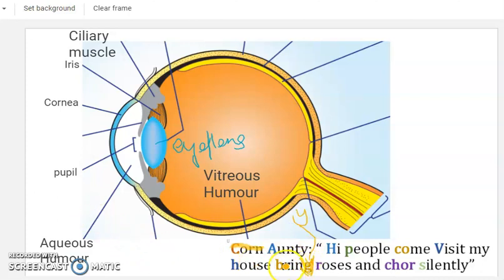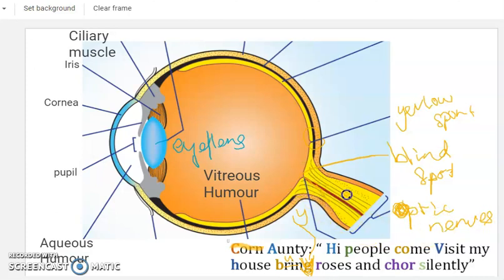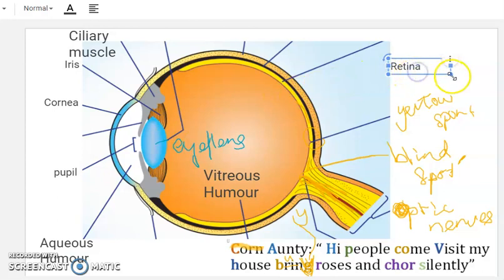Buy roses — B stands for blind spot, 看不到的. What about Y — there's a yellow spot. 你们要知道 blind spot 为什么它是忙的呢？因为这个 optic nerve，optic nerve 的尾巴全部都在这里，that's why 这个是 blind spot. Yellow spot 是最 sensitive 的. Roses — R stands for retina, not ribina — retina. 我们从这里看过去，最里面的是 retina.